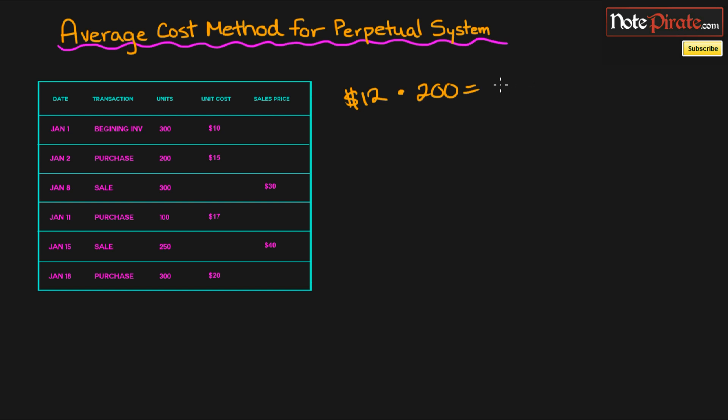And then we would say that the cost of goods sold would be like $2,400. But for this average cost method, for the perpetual system, we're actually going to have to create a moving average after every purchase that we make, like on January 2nd or January 11th or January 18th. So let's go ahead, see how we're going to do this. Let's go through it slowly.